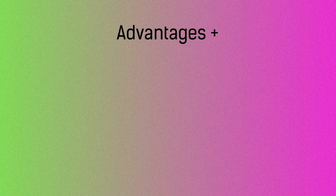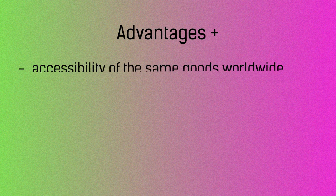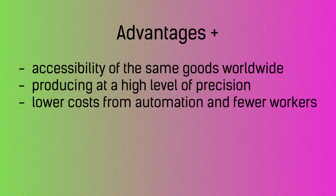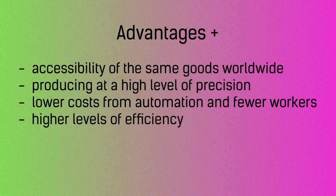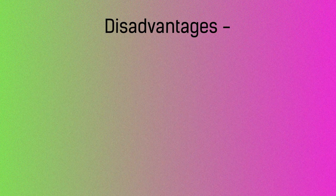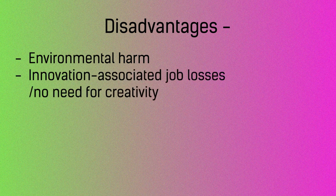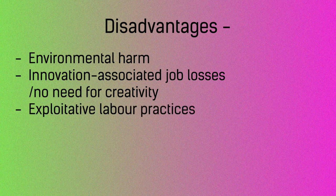Mass production has both advantages and disadvantages, we have to admit that. Advantages include: accessibility of the same goods worldwide, producing at a high level of precision, lower costs from automation and fewer workers, and higher levels of efficiency. Disadvantages include: environmental harm, innovation-associated job losses, no need for creativity, and exploitative labor practices.